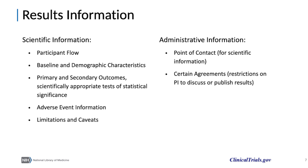Results submissions include scientific information provided in four modules: participant flow, baseline and demographic characteristics, outcome measures and statistical analyses, and adverse events. An additional module, Limitations and Caveats, provides a free text field where data submitters can provide information about considerations for interpreting the reported data. There are also two modules for administrative information, including contact information for the point of contact for study results and a description of any agreements between the principal investigator and the study sponsor, including ones that restrict the PI from discussing or publishing study results.